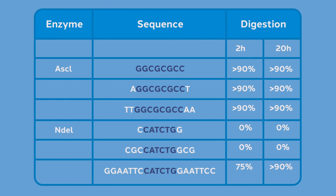Most enzymes require a few nucleotides outside of their recognition sequence in order to stably attach to DNA. For example, ASC1, which has an eight-base pair recognition sequence, shows over 90% digestion whether or not extra bases flank the restriction site. In contrast, NDE1 does not show efficient cleavage unless there are seven bases on either side of the recognition sequence — which is more typical of most restriction enzymes. This need for sufficient flanking DNA can become a problem when restriction sites in a multi-cloning site overlap or are immediately adjacent to each other.